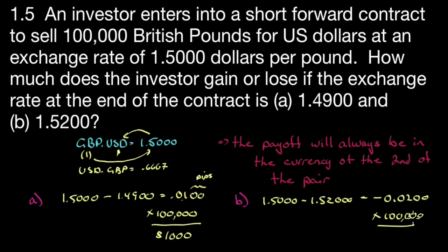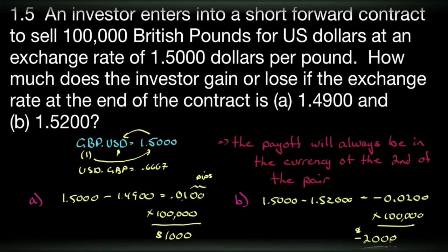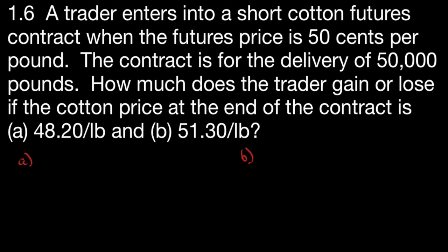A trader enters into a short cotton futures contract when the futures price is 50 cents per pound. The contract is for delivery of 50,000 pounds. How much does the trader gain or lose if the cotton price at the end of the contract is 48.2 per pound and 51.3 per pound? Well, that's easy enough. We would solve it the same way we solved the previous question. We are short at 50.